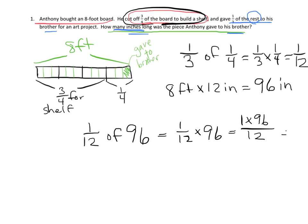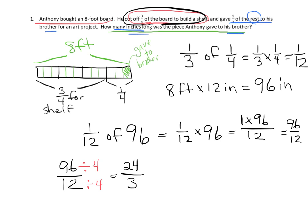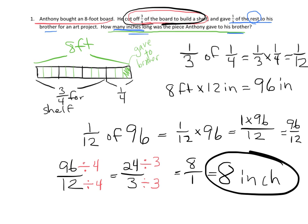So the brother gets one-twelfth of 96 inches. That equals 1/12 times 96, which is 96 over 12. Simplifying by dividing by 4 gives 24 over 3, and dividing by 3 gives 8 over 1, which equals 8. So the brother gets 8 inches of wood.